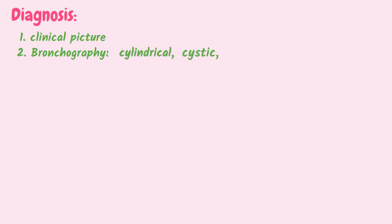The clinical picture of bronchiectasis can be similar to chronic bronchitis. So, in addition to the clinical picture, here are the supplementary methods which can be used to diagnose bronchiectasis. First and most important is bronchography, which is the main diagnostic method for detection of bronchiectasis. In bronchography, the following types of bronchial dilatation can be detected: cylindrical dilatation, cystic, and varicose dilatation. The next method is x-ray diagnosis, in which we can see increased transparency in the part of bronchiectasis and deformation of the pulmonary pattern.